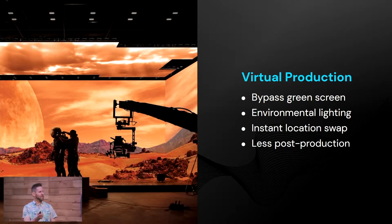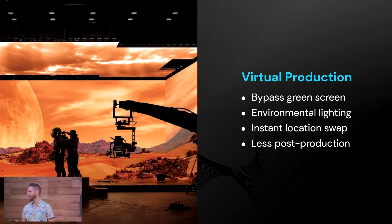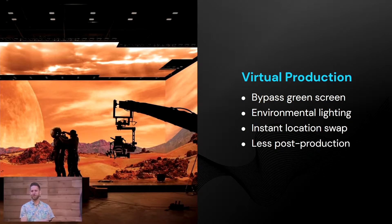And then you can instantly swap locations. You don't have to send your crew halfway around the world to get a scene in a forest or desert — you just click a few buttons, change your virtual background, and this reduces travel time, environmental impact, carbon footprint, all that stuff. Everything is captured in camera and saves a lot of time in post-production. It's essentially ready to go as soon as you shoot it.